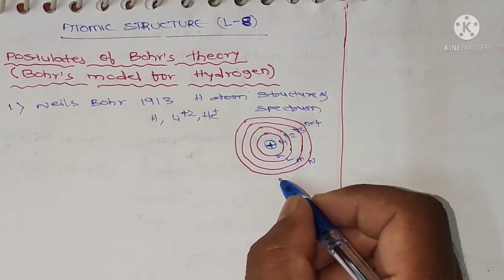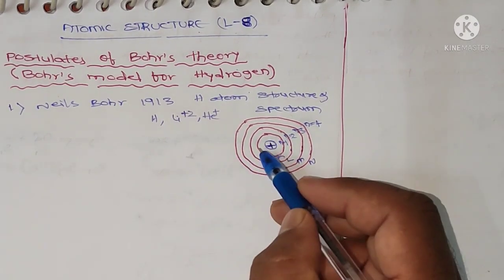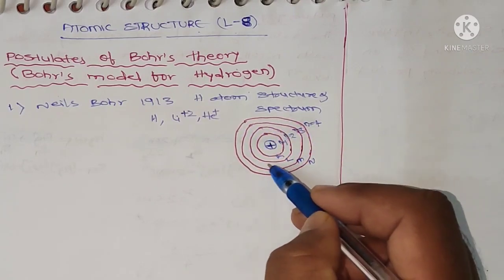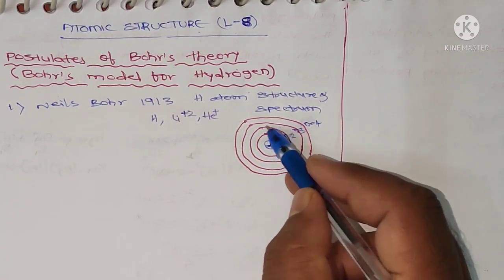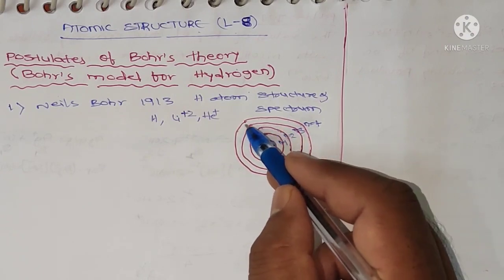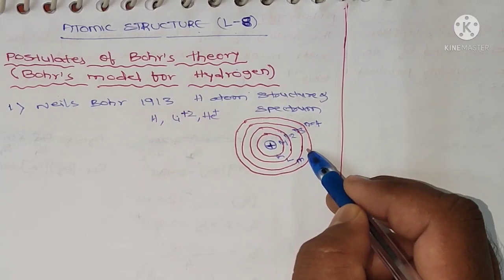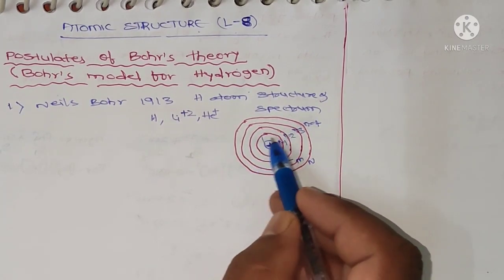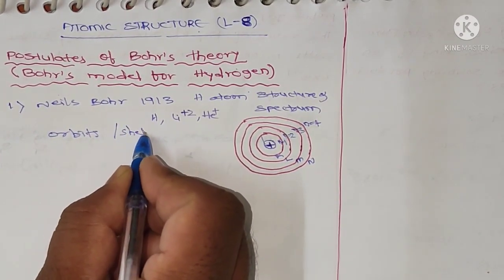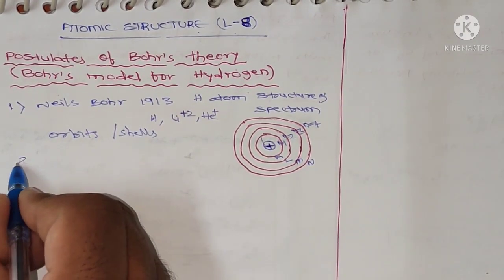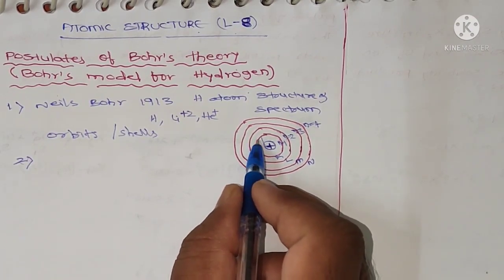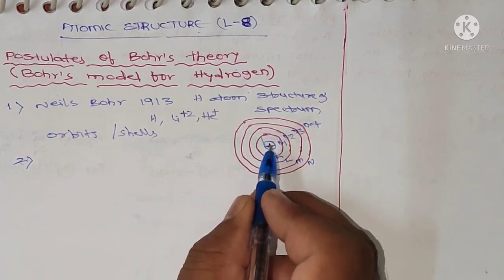These are the shells or orbits. In Bohr's model, electrons revolve around the nucleus in circular paths called orbits or shells. Each orbit has a fixed amount of energy; hence these orbits are called energy orbits or energy shells.